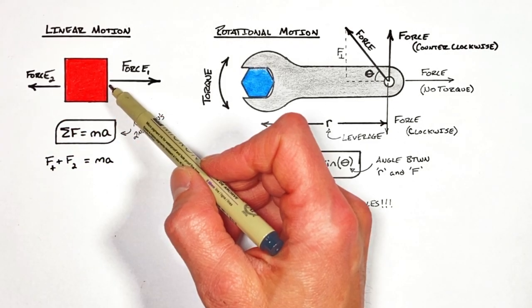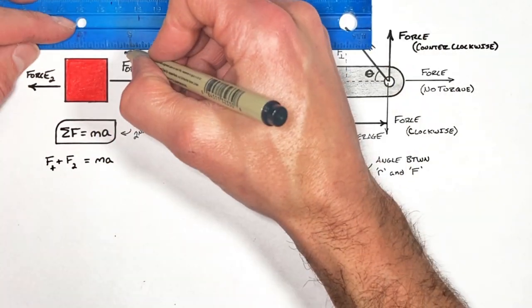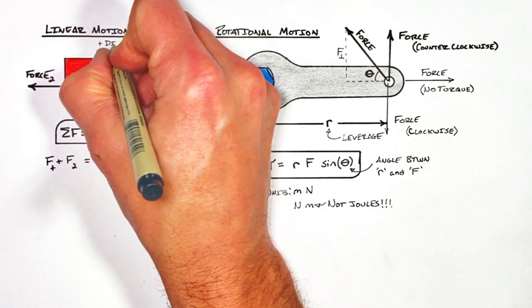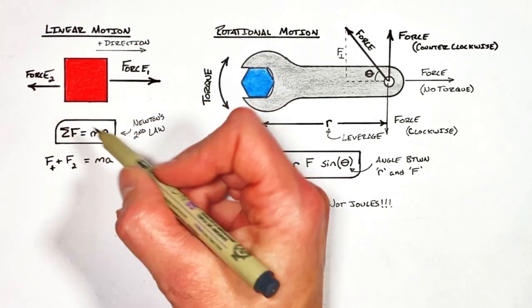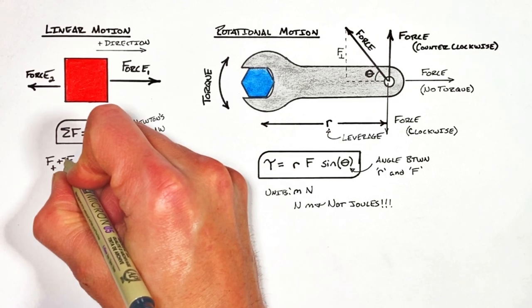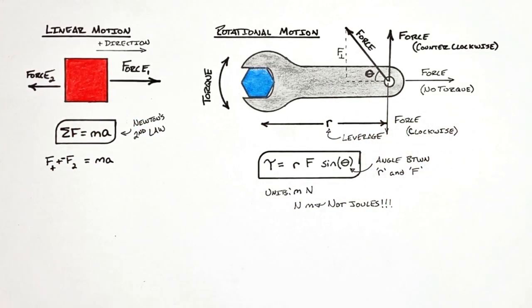Which is why when dealing with linear motion, we always were establishing a positive direction anytime something was moving around. Which in the case of our block here means this force 2 is in the negative direction. But the cool thing is we can apply Newton's law to torque.